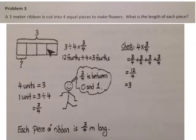Our tape diagram shows that the whole is three and is divided into four equal pieces. So four units equals three. One unit equals three divided by four. Three divided by four is three-fourths.